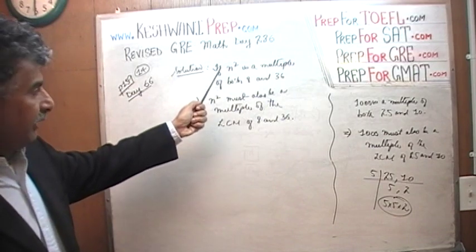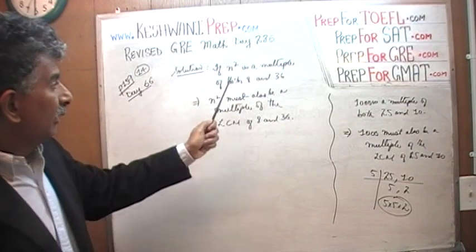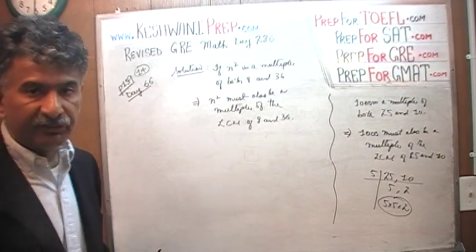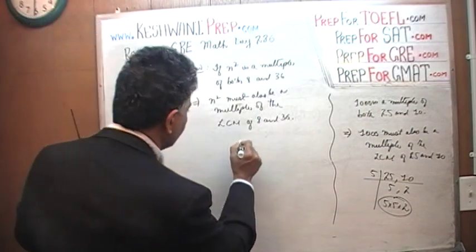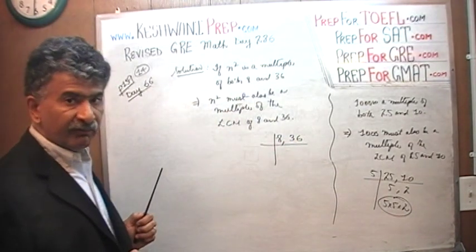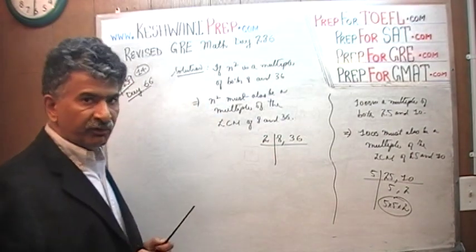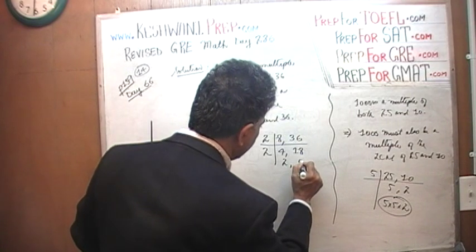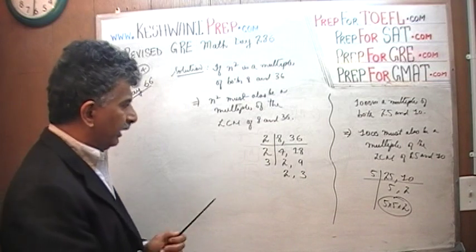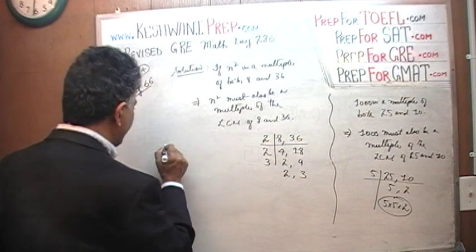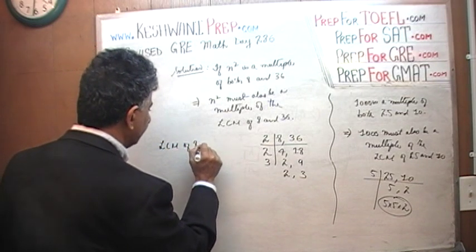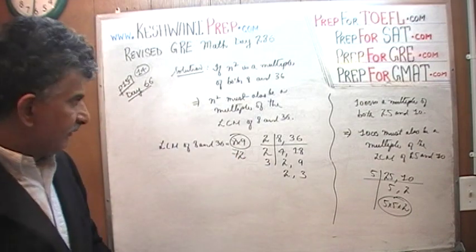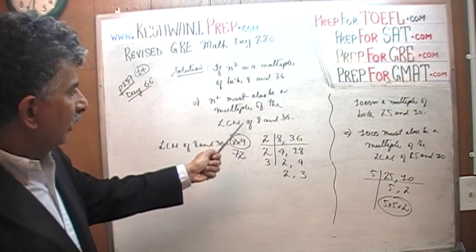One more time: we are told that n squared is a multiple of both 8 and 36. If that is true, then n squared must also be a multiple of the LCM of 8 and 36. To find the LCM of 8 and 36, we look for prime factors. Dividing both by 2 gives 4 and 18; dividing again by 2 gives 2 and 9. The LCM of 8 and 36 turns out to be 8 × 9 = 72. In other words, n squared has to be a multiple of 72.